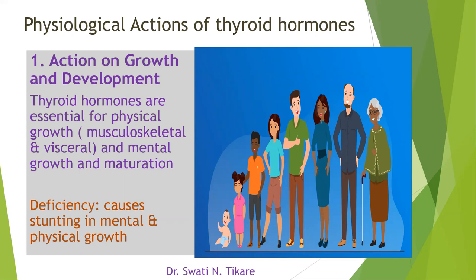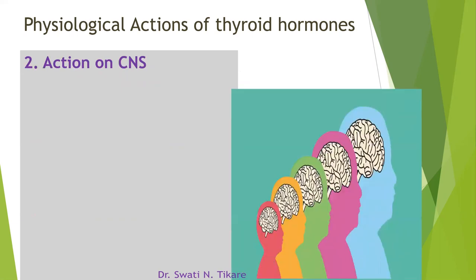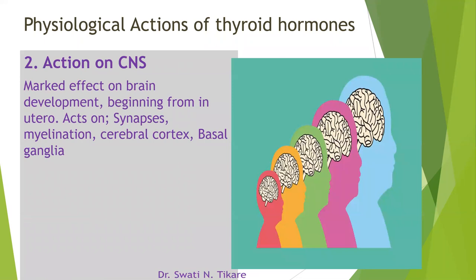The next action is on the CNS. Thyroid hormones have a marked effect on brain development, beginning even from in utero. When the baby is in utero, the action of thyroid hormones is very essential. Even a pregnant lady's thyroid hormones need to be at a normal level; otherwise, the fetus will be affected in utero.